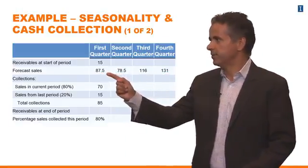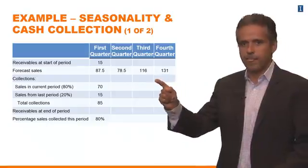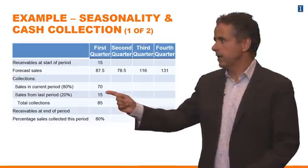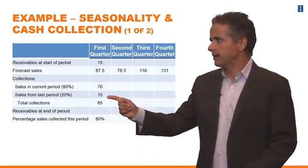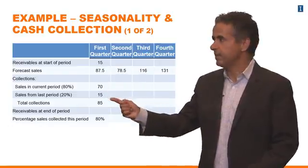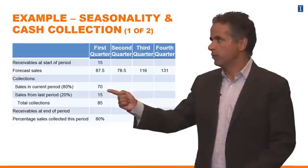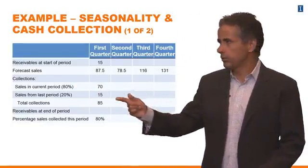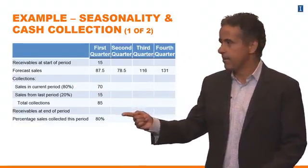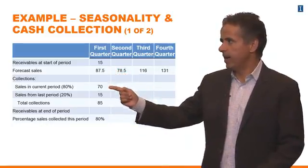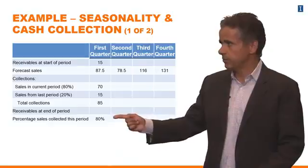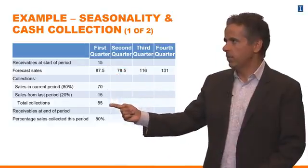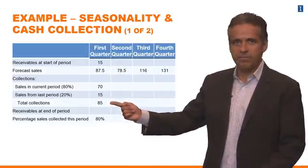Sales start slow, and then they pick up in the fourth quarter. Let's say that the company starts the fourth quarter with receivables equal to $15 million. So the company is going to collect this $15 million this quarter, and then collect some cash from the sales this period. Let's say that the percentage of sales collected this period is 80%. So you sell $87.5 million, you collect 80% this period. In addition to that, you collect the existing receivables, so your total collection is $85 million this period.